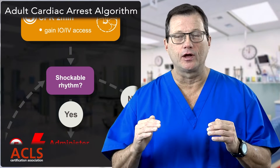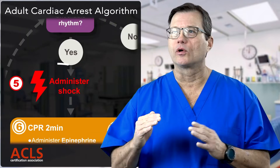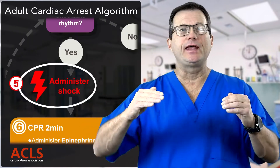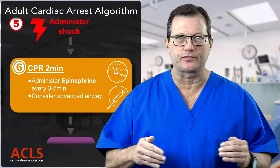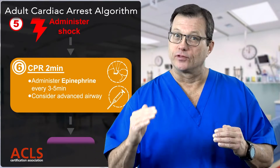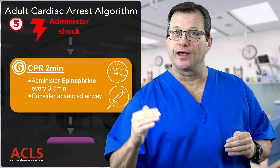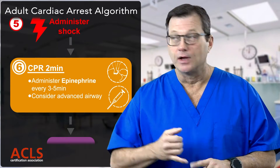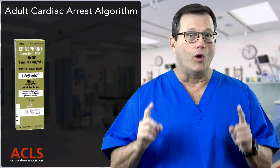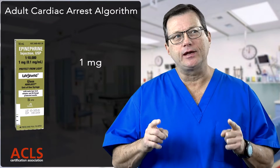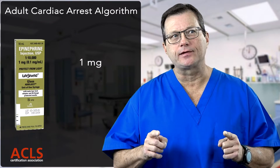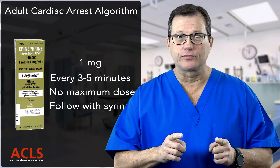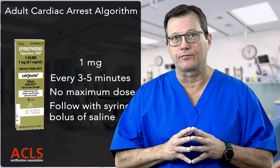If they're still in V-fib or pulseless V-tach, we're going to administer another shock. Immediately after that shock, resume chest compressions for the next two minutes. During those next two minutes, we're going to administer our first drug, which is epinephrine 1 to 10,000, and we can administer that every three to five minutes. There's no maximum dose — every three to five minutes we're going to administer epinephrine.